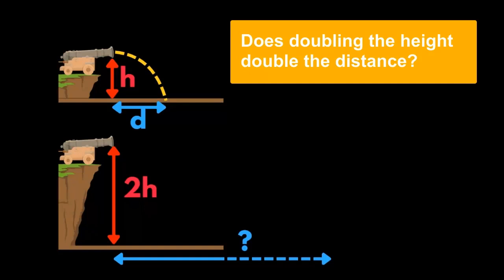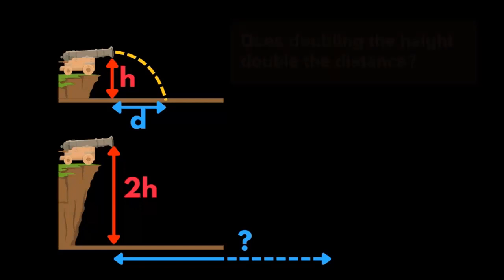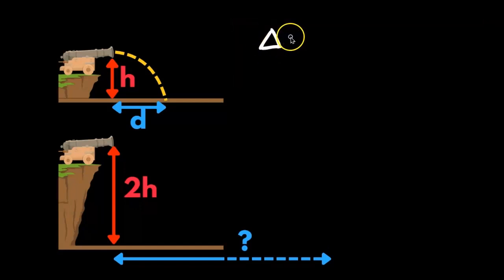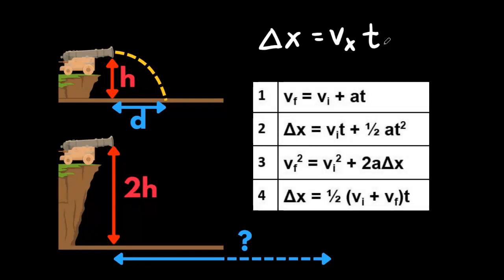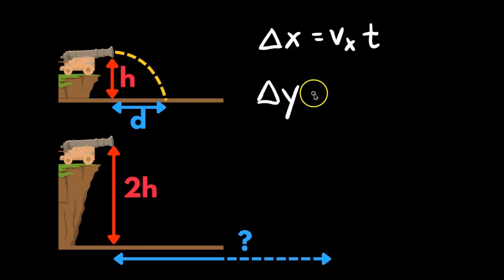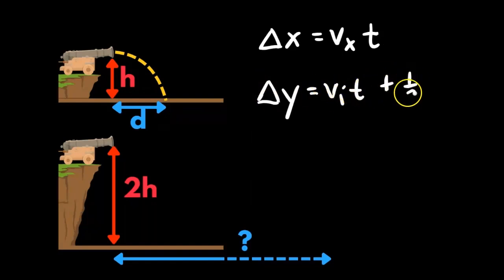Horizontally, the motion is moving at a constant velocity, so we can describe this motion with delta x equals vx, the horizontal velocity, times t, the time. Vertically, there is an acceleration of 9.8 meters per second squared downward, and we would use one of the four kinematic equations to describe the vertical motion. For this problem, we're going to use delta y equals vi·t plus one-half a·t squared.